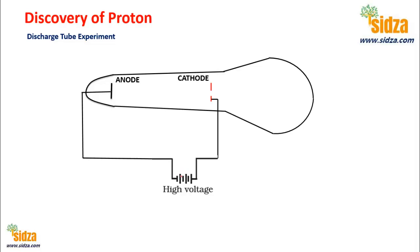For this purpose, Goldstein in 1886 performed discharge tube experiments in which he took a perforated cathode. In the discharge tube experiment done by J.J. Thomson, the anode had perforations. In Goldstein's modified experiment, it is the cathode that has perforations — some holes in it.